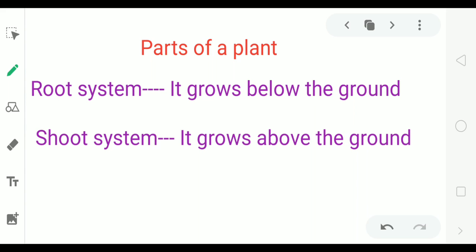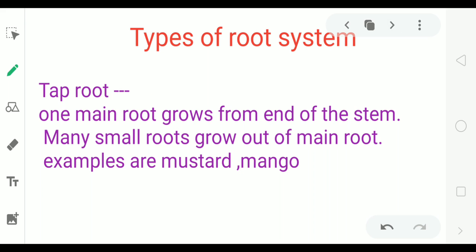Root system and shoot system. Root system grows below the ground and shoot system grows above the ground. Now root system is of two types. First, taproot. In taproot, one main root grows from the end of stem and many small roots grow out of main root.